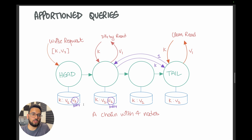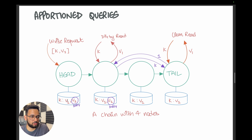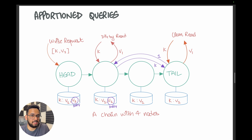While there is not much we can do about write latency, we can optimize read latency using something called apportioned queries. 'Apportion' means to divide or share out — in this case, reads will be shared by all the other nodes in the system. In this strategy, each node in the chain can store multiple versions of an object, and each version includes a monotonically increasing version number. You can see that key K has a couple of versions: V1 and V2.